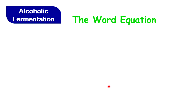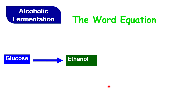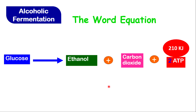The word equation for alcoholic fermentation: there is no need for oxygen. The glucose, which is the food — and note that all respiration requires glucose — will break down into ethanol, which is the alcohol, and you also get carbon dioxide. This carbon dioxide is very useful in the baking of bread; it causes the bread to rise. You also get energy, and it turns out that one glucose molecule produces only two ATP molecules.